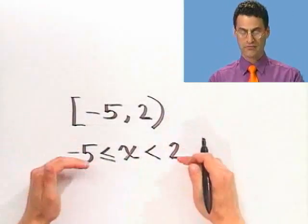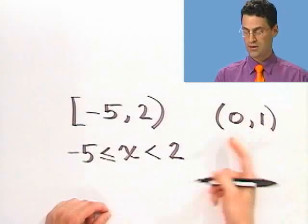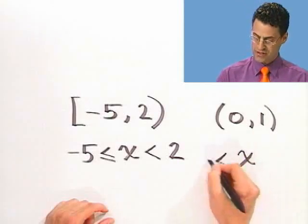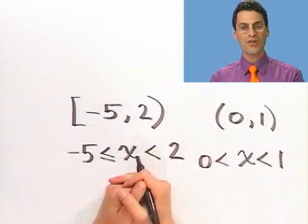And one last one, maybe try this one: zero to one. What does that mean? Well, that means all the values for x that are strictly bigger than zero but strictly less than one, because there's two parentheses here. That's all there is. So here's the interval notation. See you soon.